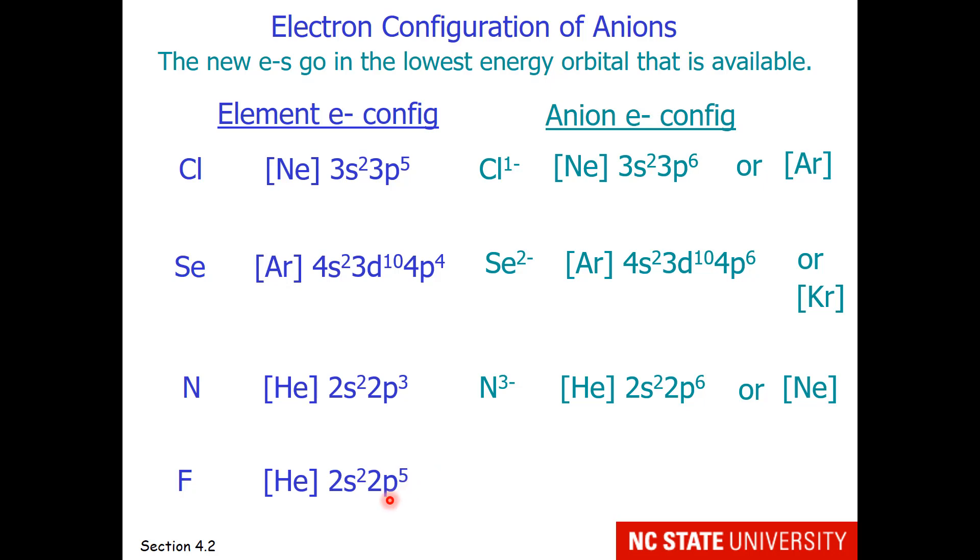Fluorine's last sublevel is 2p5. It has room for one more electron, so it becomes fluoride 1-. And written shorthand, it is isoelectronic with neon.